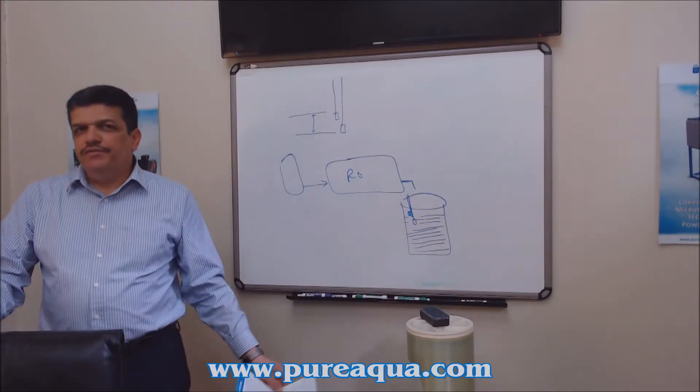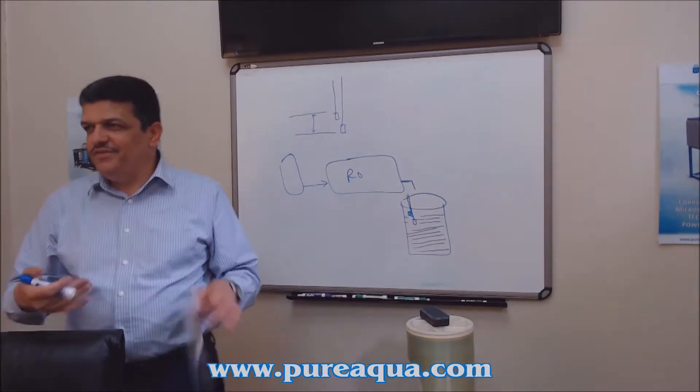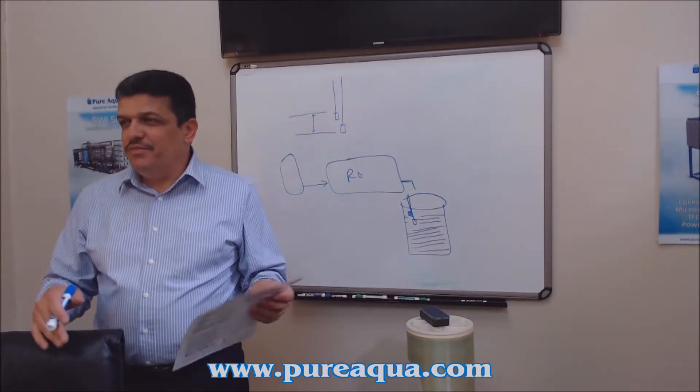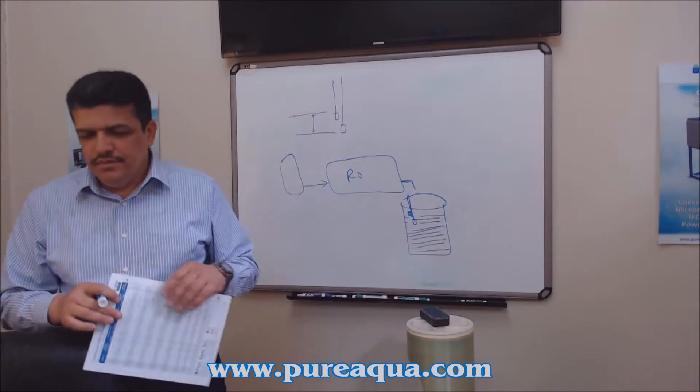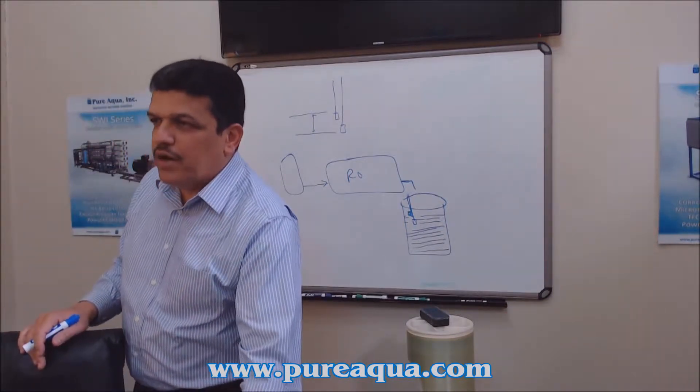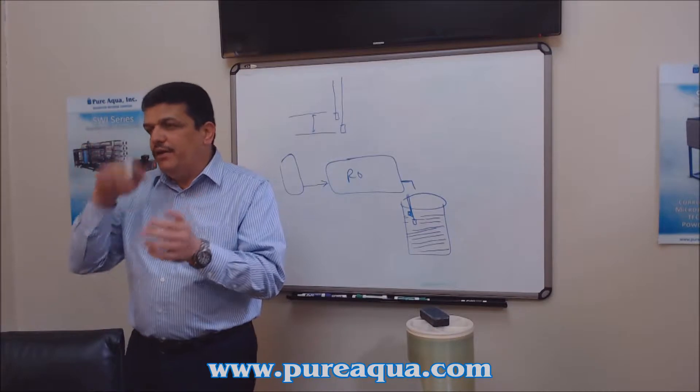Water softener, from the name itself, makes the water soft. That means there's something that makes the water hard. So what are those ions that usually make the water hard? It's calcium and magnesium.